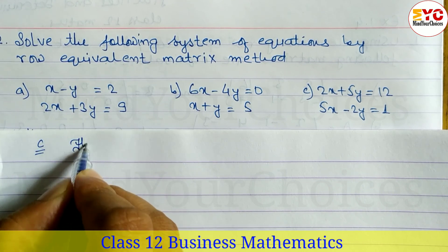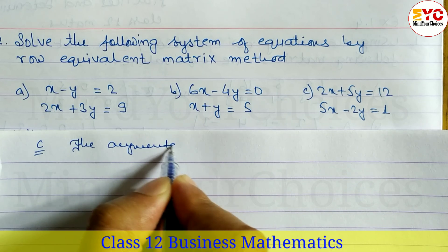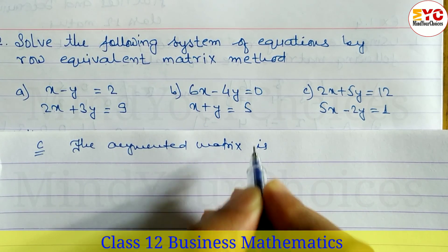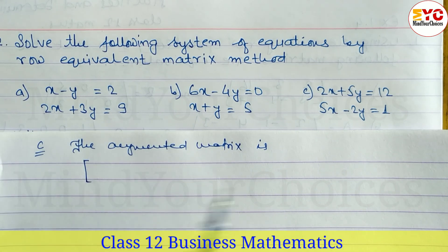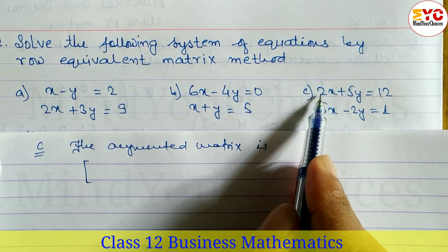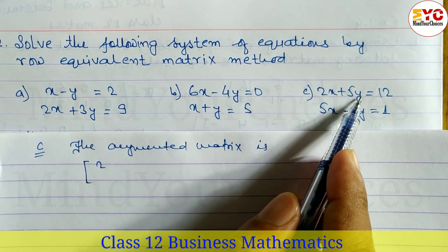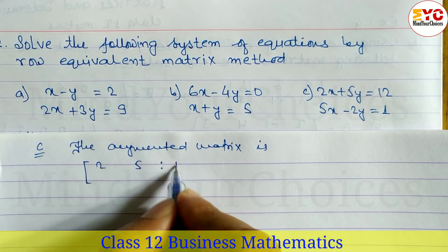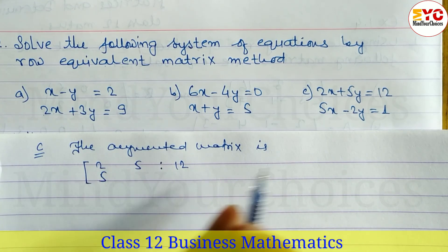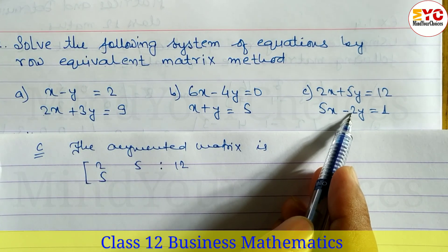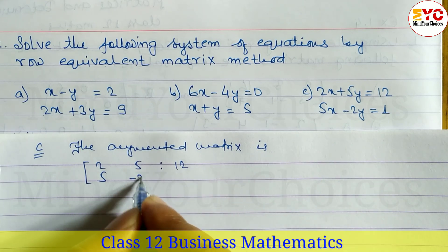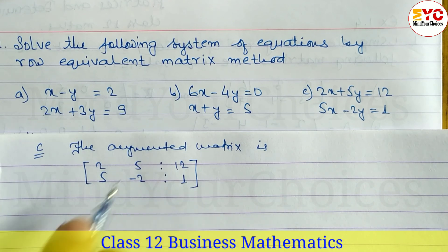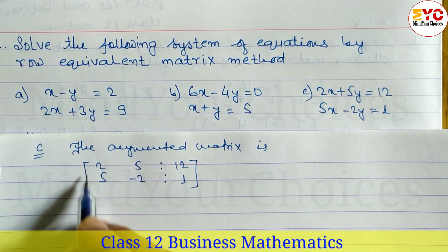First we write the augmented matrix. We take the coefficients of x and y and the constant numbers. Coefficient of x is 2, coefficient of y is 5, constant is 12. For the second equation, coefficient of x is 5, coefficient of y is minus 2 (we take it with sign), and constant is 1.